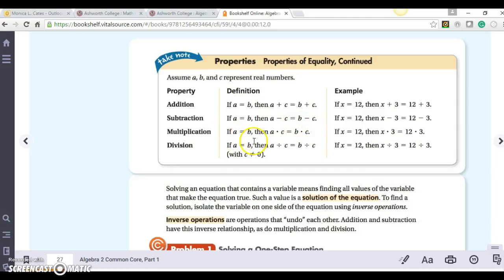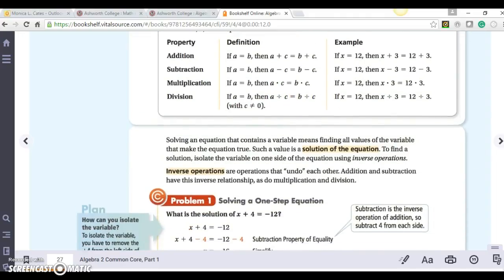And for multiplication, if A equals B, then A times C equals B times C. And for division, if A equals B, then A divided by C equals B divided by C. So we can substitute those properties in.